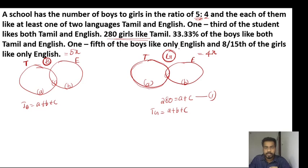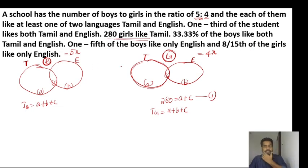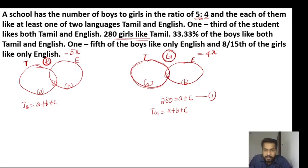And one fifth of the boys like only English. And 8 by 15 of the girls like only English. English is only English. We have to do A plus C. A plus B is equal to A plus C, and B plus C is also equal. It is the plus C.